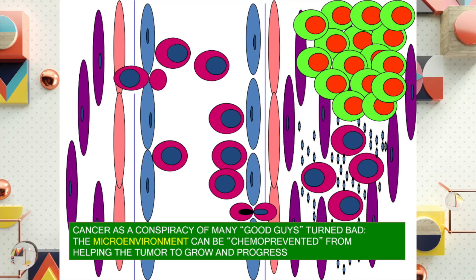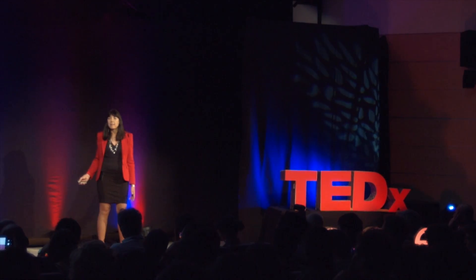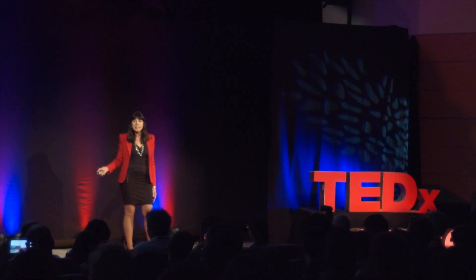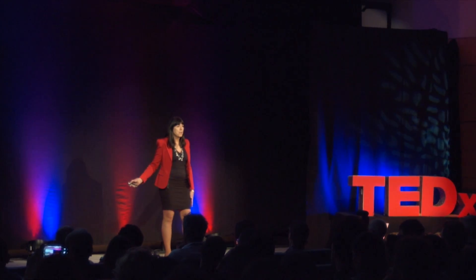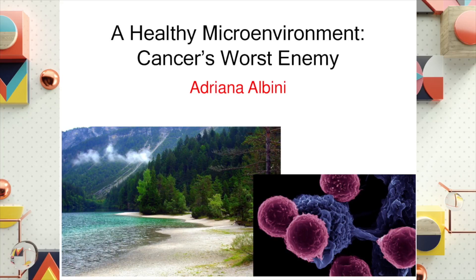Going to the end, basically cancer is a conspiracy of good guys turned bad. The microenvironment can be chemo-prevented from helping the tumor to grow and progress. We can keep our microenvironment healthy by doing exercise, getting low-toxic anti-inflammatory drugs, or eating a very good Mediterranean diet. There are also many recent therapies in immunology to re-evaluate the potential of immune cells, and these cells in the environment can fight the tumor and avoid its growth. The future for me is having a healthy body, fighting cancer, or actually preventing that cancer ever starts. Thank you.